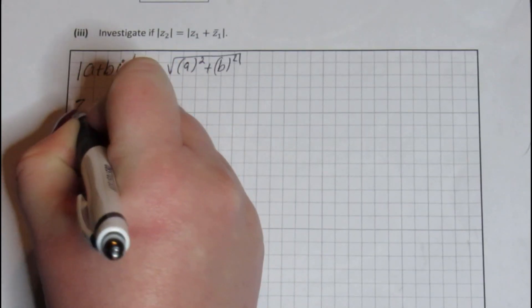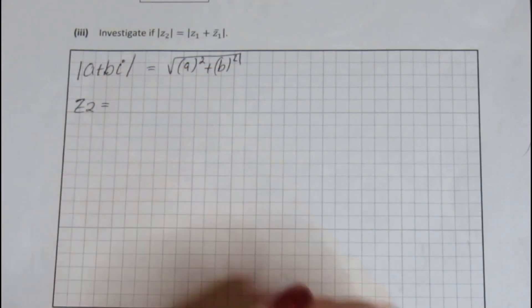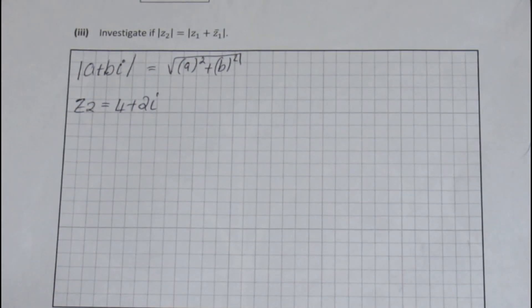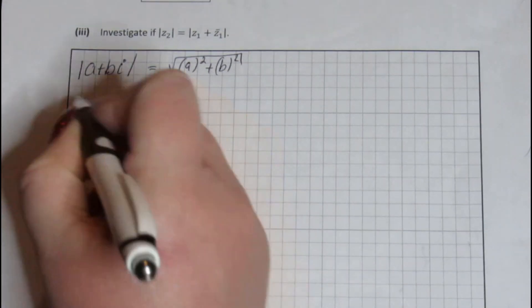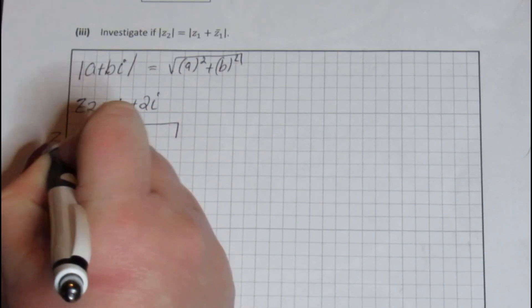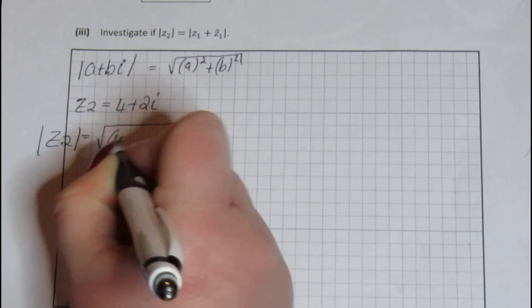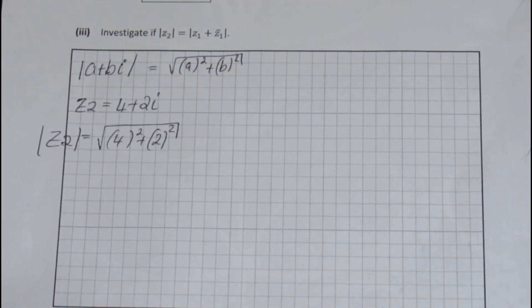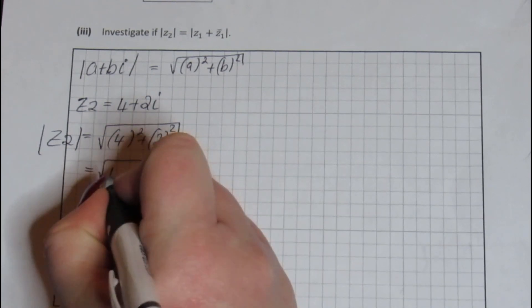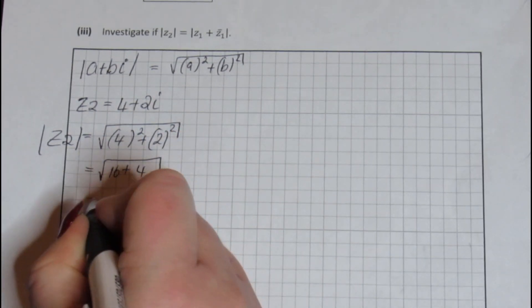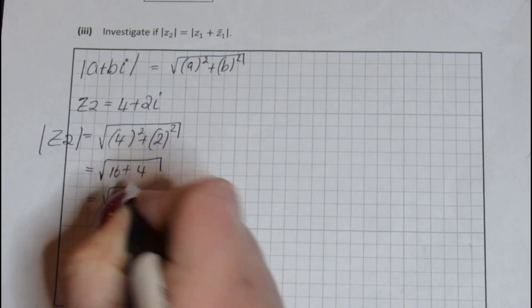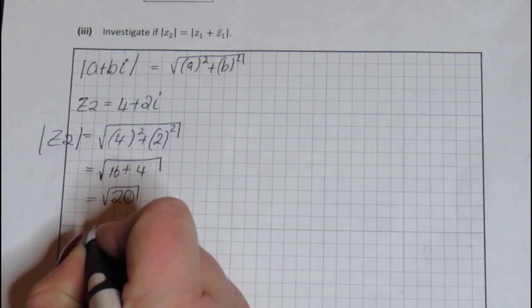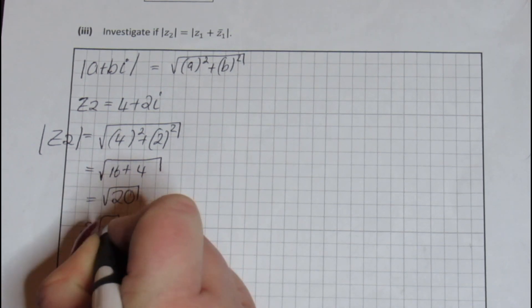Let's do Z2 first. So we know that Z2 is equal to 4 plus 2i. We found that up above in part I. The modulus of that is the 4 squared plus the 2 squared all in a square root. 4 squared is 16. 2 squared is 4. We get the square root of 20. Now we can tidy that up. What you can do here is you can reduce that and it will be 2 root 5.